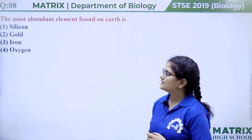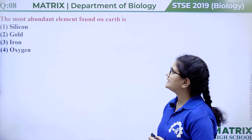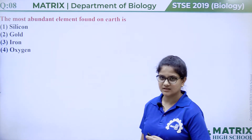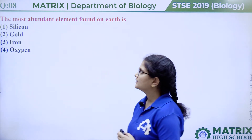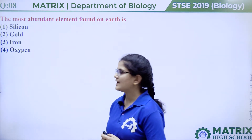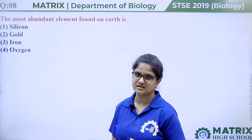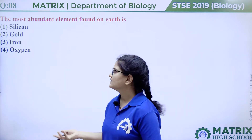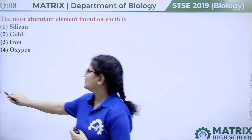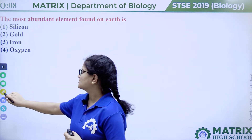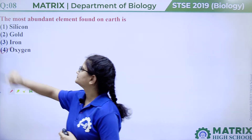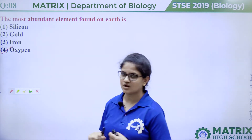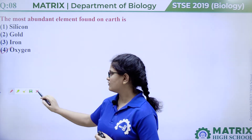Question number eight: the most abundant element found on the earth is silicon, gold, iron, or oxygen. We all know the answer is oxygen. So the answer is option four.